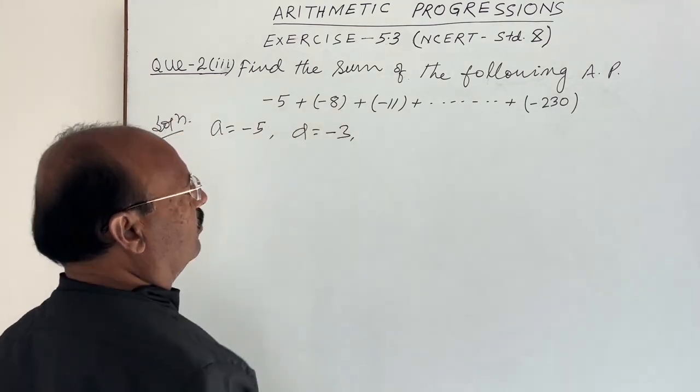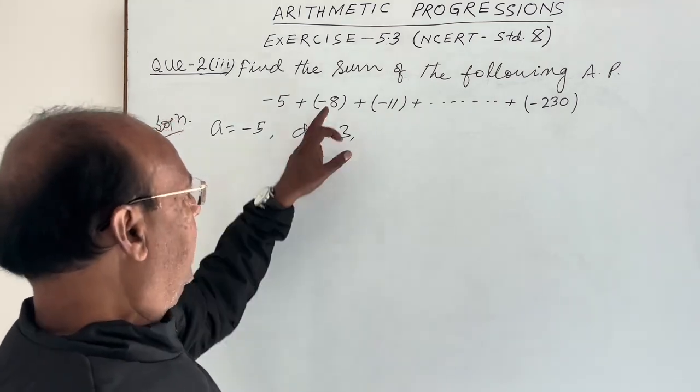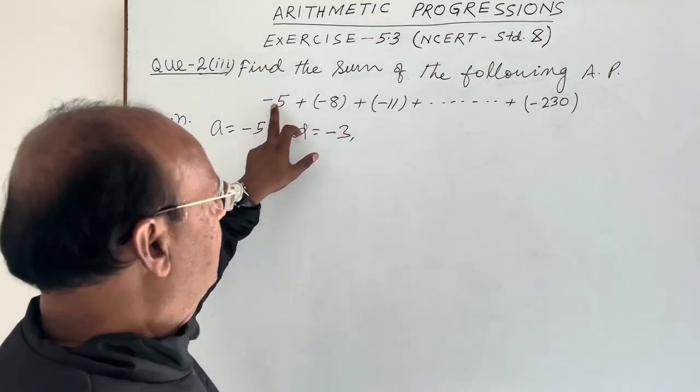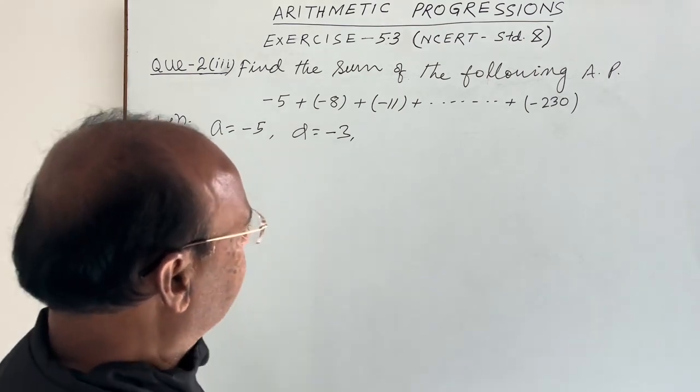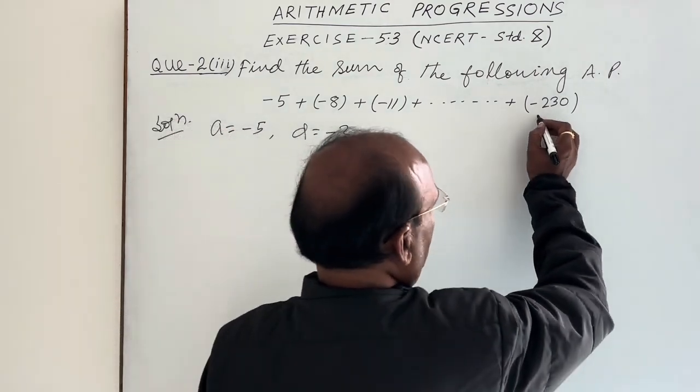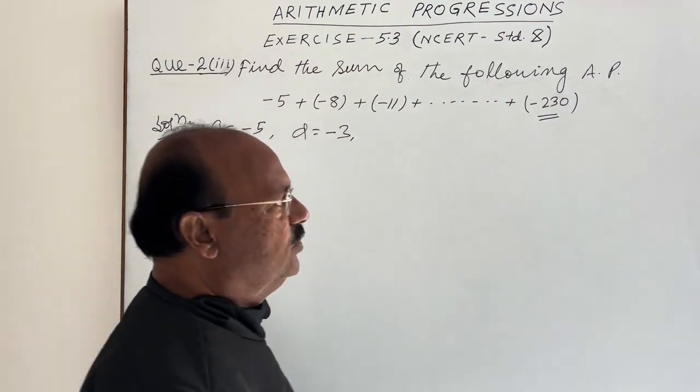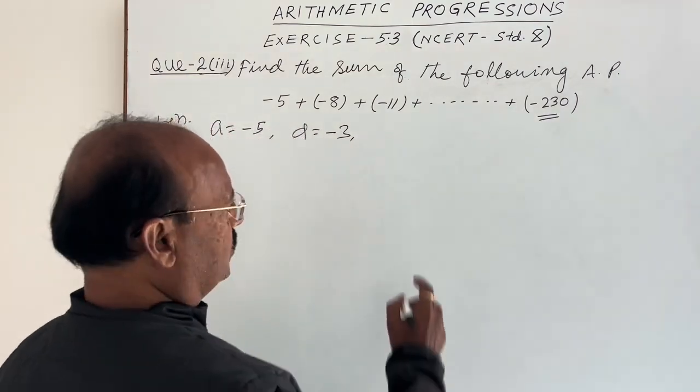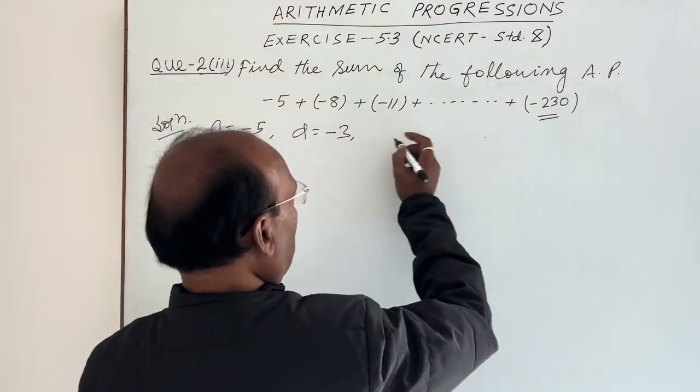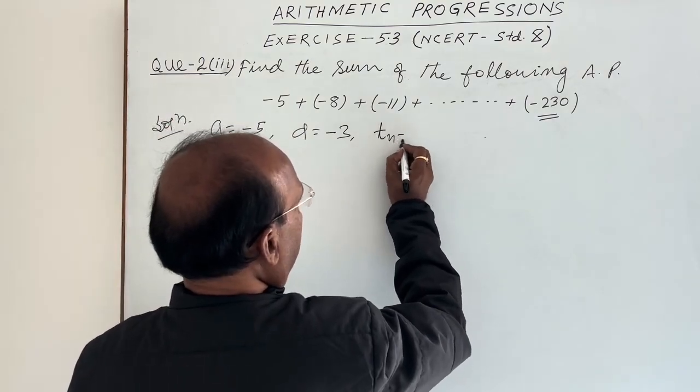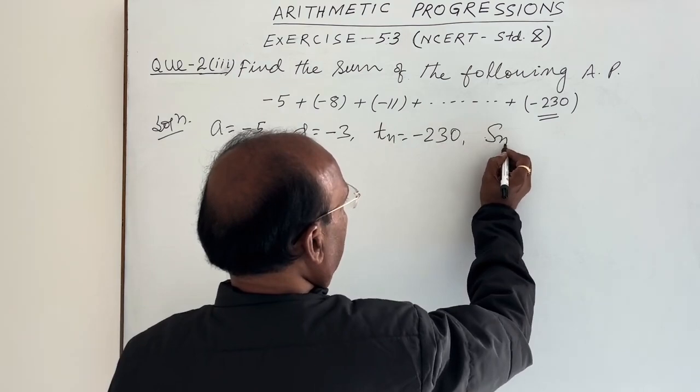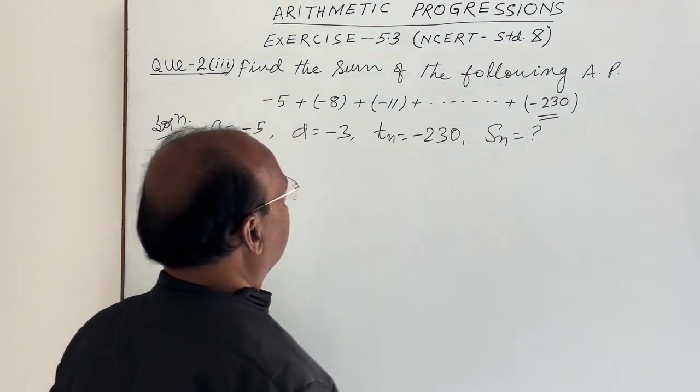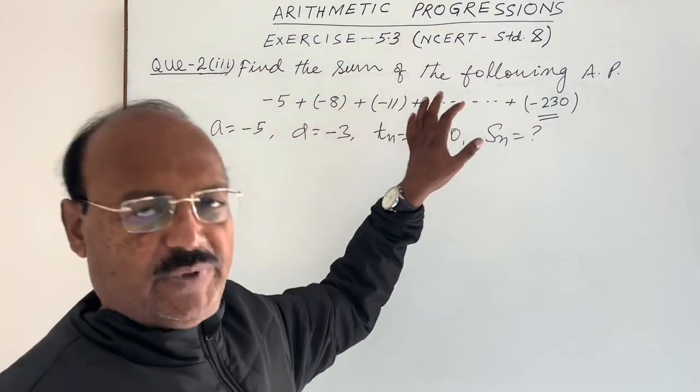This is the common difference. T2 minus T1 gives common difference. And we have to find sum up to minus 230. So this is the nth term. We can write Tn is equal to minus 230. We have to find out sum of all these terms of this AP.